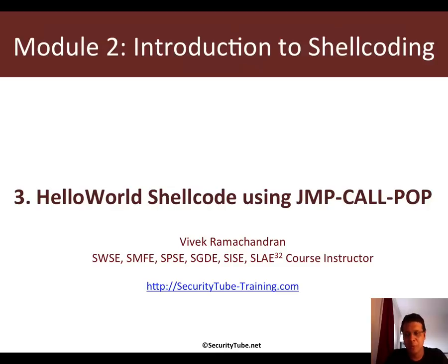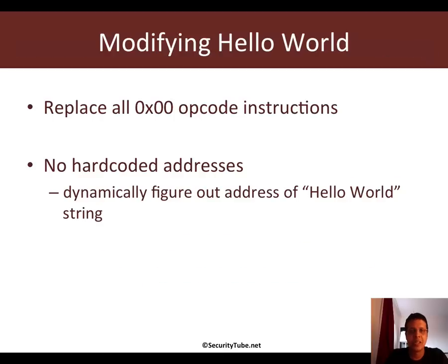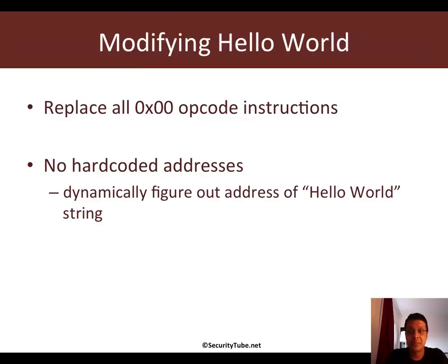If you are wondering what jump call pop is, what we would find when we take our hello world dot nasm which we created earlier and try to convert that into shellcode is that there are going to be a ton of 0x00s in it. So we would have to ensure that we replace all of that with non-zero opcode instructions. Apart from that, we cannot have any hardcoded addresses inside of a shellcode, because we do not know where our shellcode would be located in memory when it is delivered as part of an exploit.